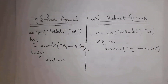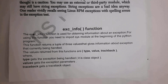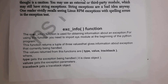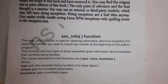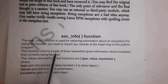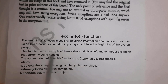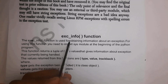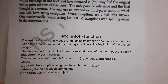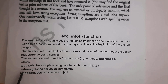Context management can be done in two ways: by using the try/finally approach, or by using the with statement approach. Next I will explain the exc_info function. The exc_info function is used for obtaining information about an exception. If any exception occurs in our program, this function provides information about it. To use exc_info, you first need to import the sys module. This function returns a tuple of three values.